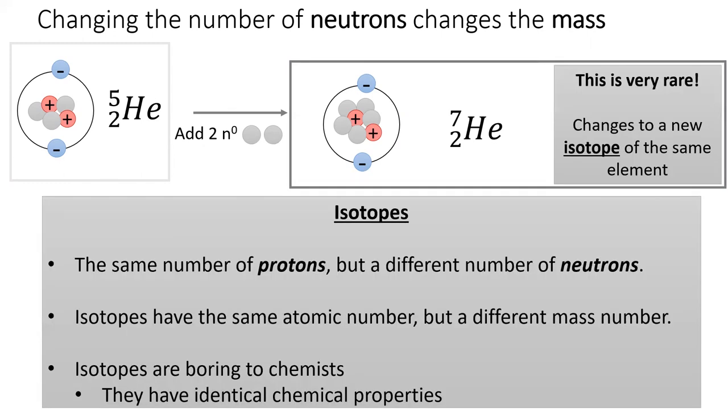Note that this does not change the type of atom it is, nor will it change the chemical properties of this atom. When two atoms have the same number of protons, but a different number of neutrons, we call them isotopes.